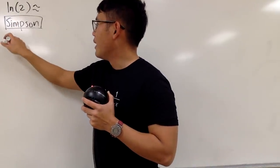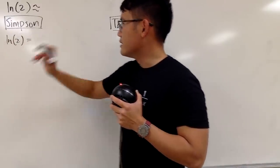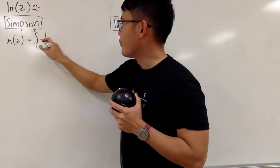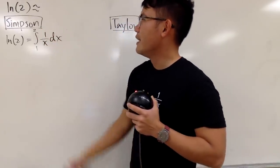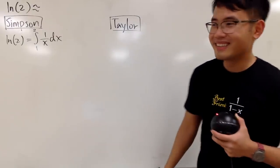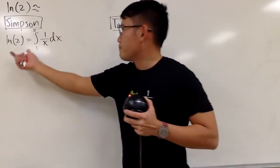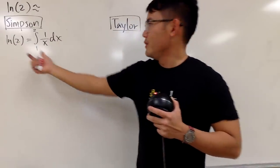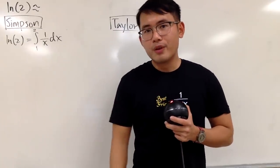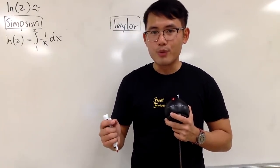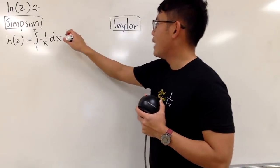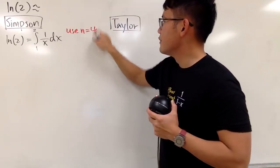So let me write this down. ln2 is the integral from 1 to 2 of 1/x dx. In fact, this is how the natural log came up historically. Once we have the integral, for Simpson's rule we need an n value, and n must be even. So just like last time, I will say n equals 4.